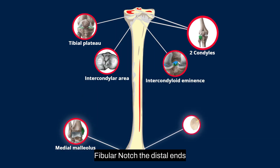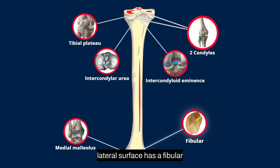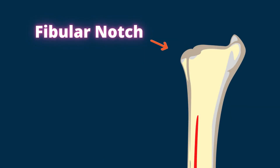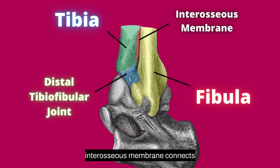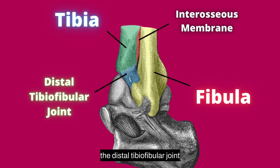Fibular notch: the distal end's lateral surface has a fibular notch, which is a facet for the distal end of the fibula. A thickening of the interosseous membrane connects the tibia and fibula to produce the distal tibiofibular joint at this location.